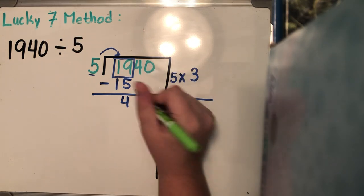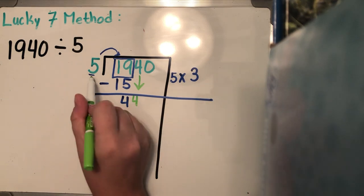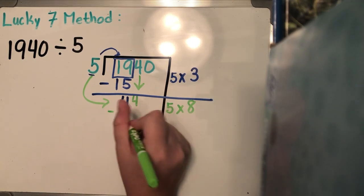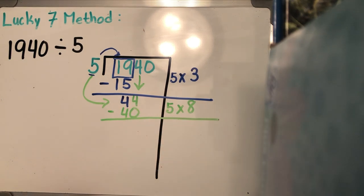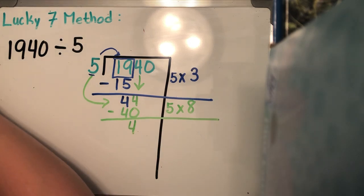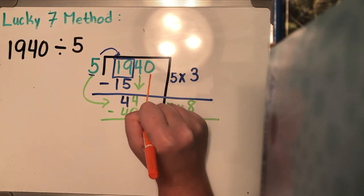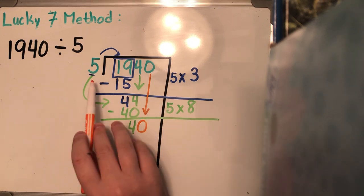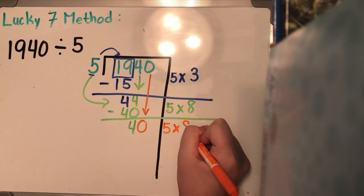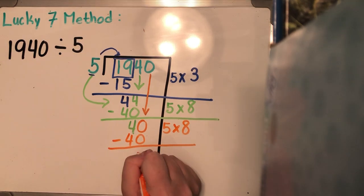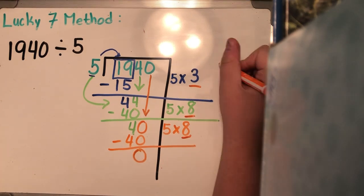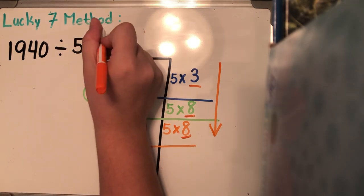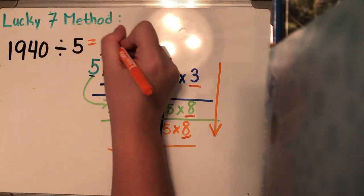Then I'm going to bring down this four. How many times can five go into 44 without going over? Five can go into 44 eight times because eight times five is 40. I'm going to subtract and get four. Now I'm going to bring down this leftover zero — you can't forget a zero, you have to bring every individual number down even if it's a zero. How many times can five go into 40? Five can go into 40 eight times, I'm going to subtract 40 from 40 and get zero. Reading top to bottom, 1,940 divided by five gives a quotient of 388.